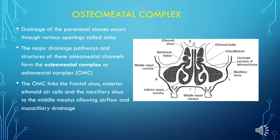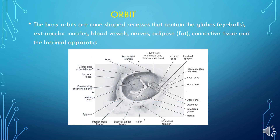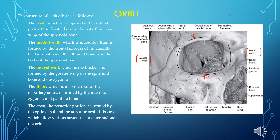The bony orbits are cone-shaped recesses containing the globes (eyeballs), extraocular muscles, blood vessels, nerves, adipose (fat), connective tissue, and the lacrimal apparatus. The roof is composed of the orbital plate of the frontal bone and most of the lesser wing of the sphenoid bone. The medial wall, which is incredibly thin, is formed by the frontal process of the maxilla, the lacrimal bone, the ethmoid bone, and the body of the sphenoid bone. The lateral wall, which is the thickest, is formed by the greater wing of the sphenoid bone and the zygoma. The floor, also the roof of the maxillary sinus, is formed by the maxilla, zygoma, and palatine bone. The apex, at the posterior portion, is formed by the optic canal and the superior orbital fissure, allowing various structures to enter and exit the orbit.